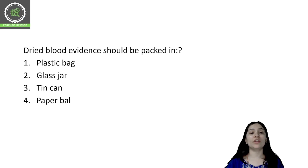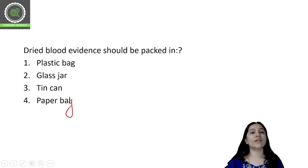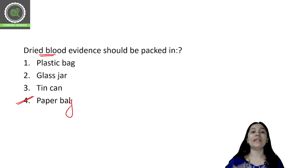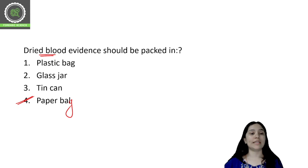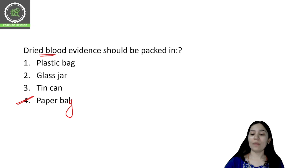Dried blood evidence should be packed in a plastic bag, glass jar, tin can, or paper bag? The correct option is the fourth one — paper bags. We collect dried blood evidence in paper bags. We have studied in many classes that dried blood evidence should not be put in plastic bags or glass jars, because there are high chances of fungal infection which can destroy the sample. That is why we use paper or breathable bags that allow air to pass through. Paper bag is the correct option for preserving and packing dried blood samples.